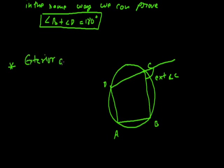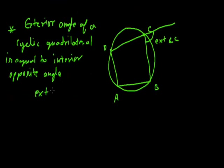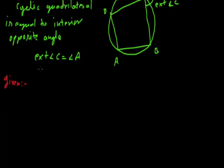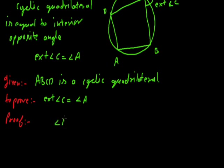We have to prove that the exterior angle of a cyclic quadrilateral equals the interior opposite angle, that is exterior angle C equals angle A. Since ABCD is a cyclic quadrilateral, we know that angle A plus angle C equals 180 degrees. Also from the figure, angle C plus exterior angle C equals 180 degrees, because they form a linear pair.